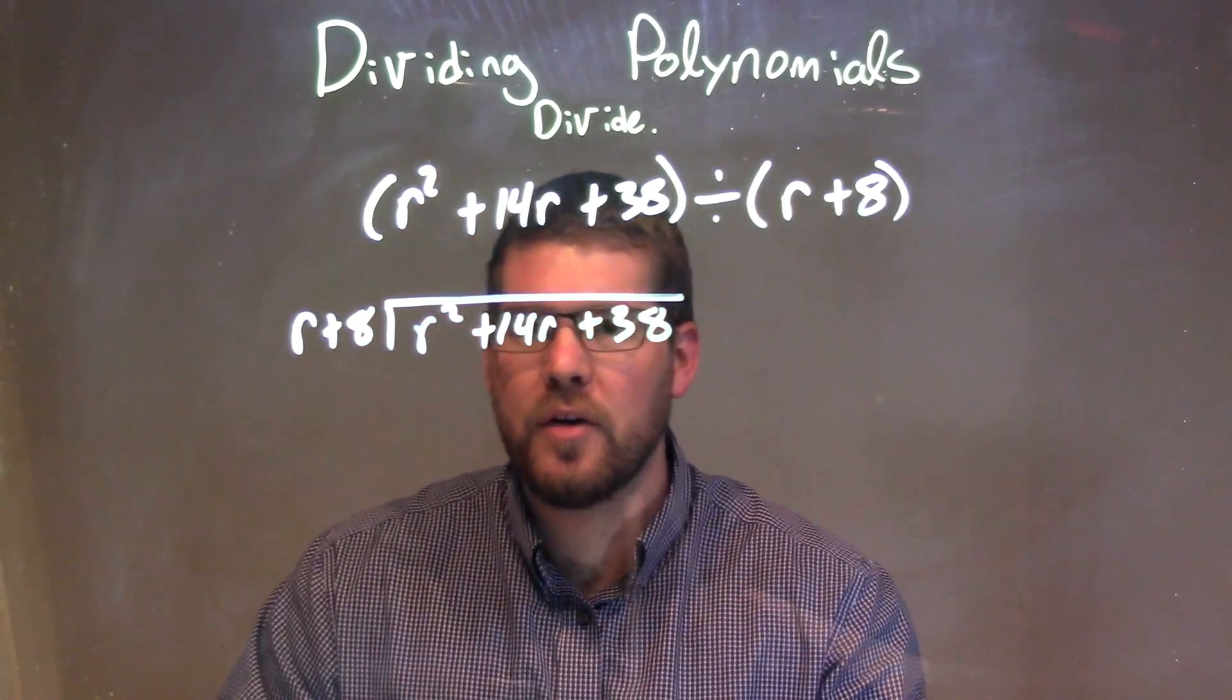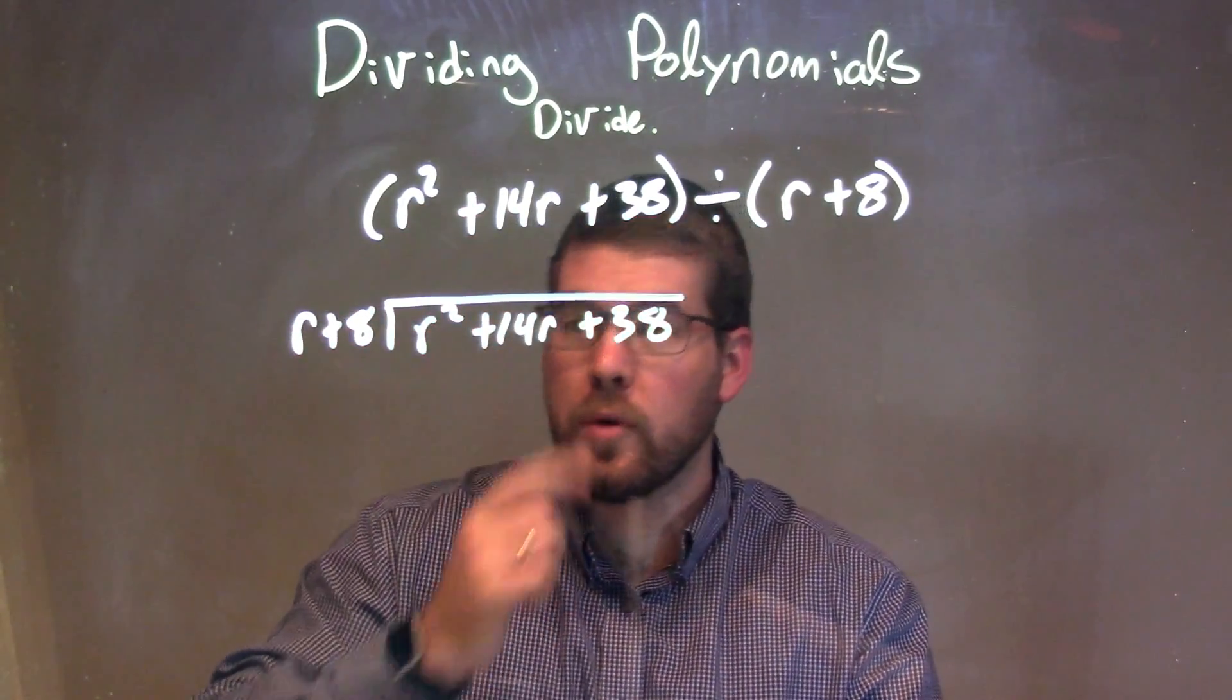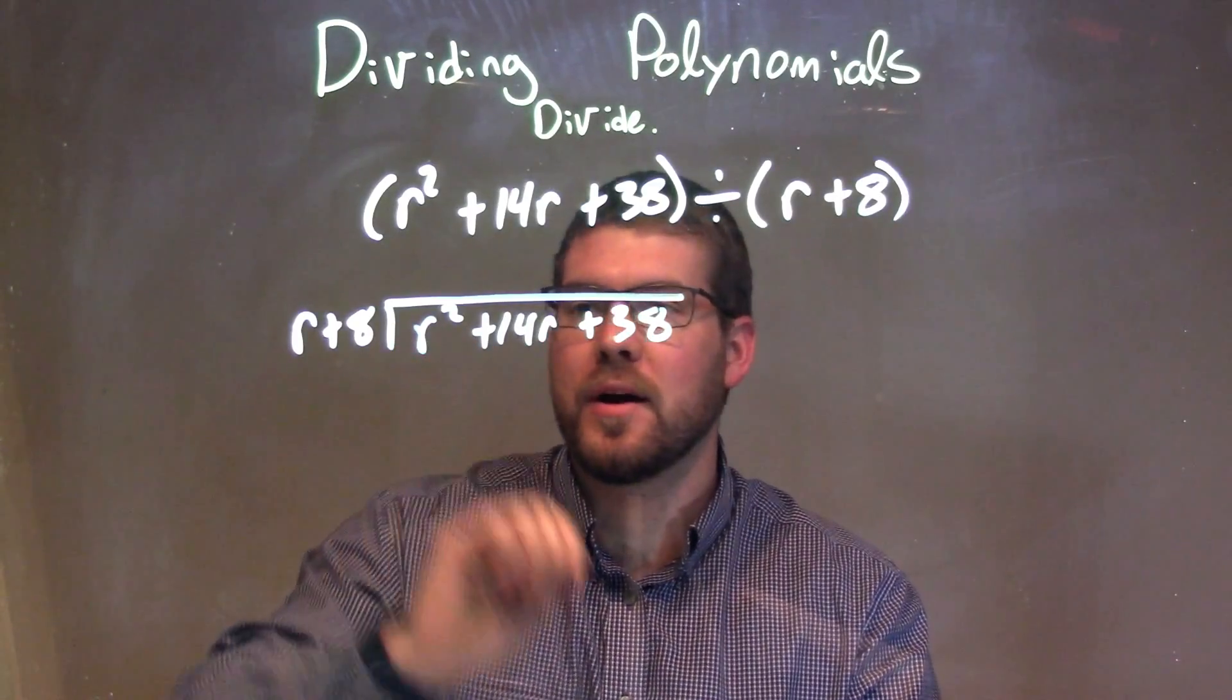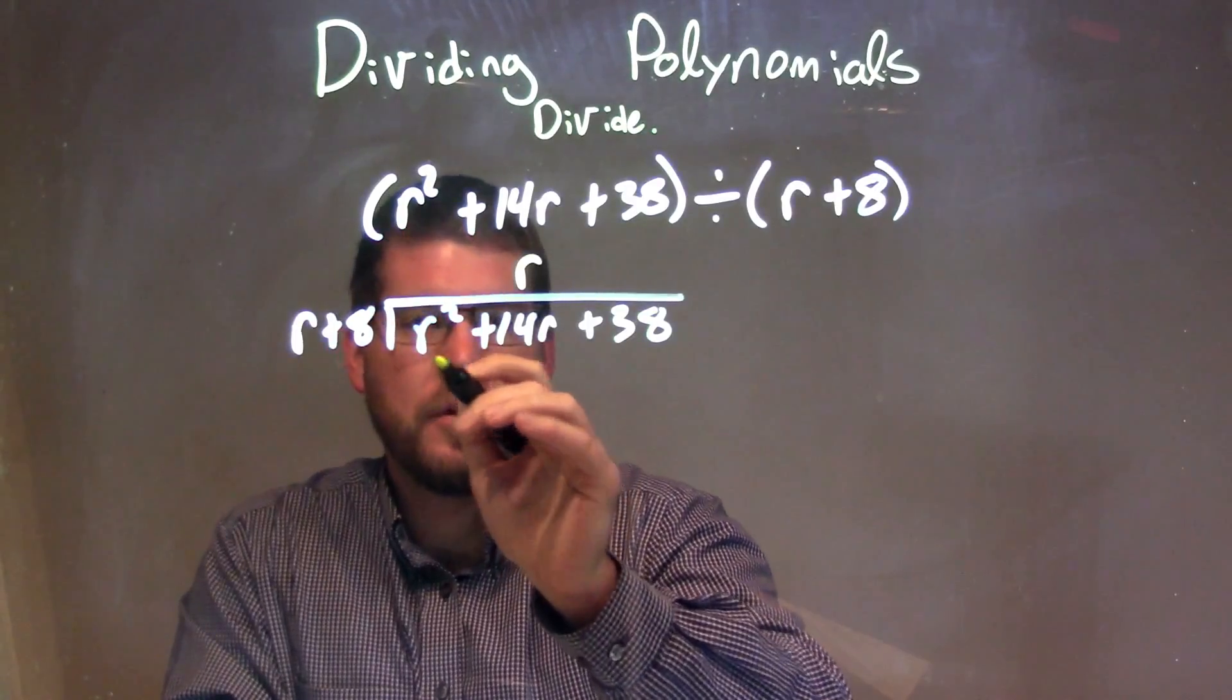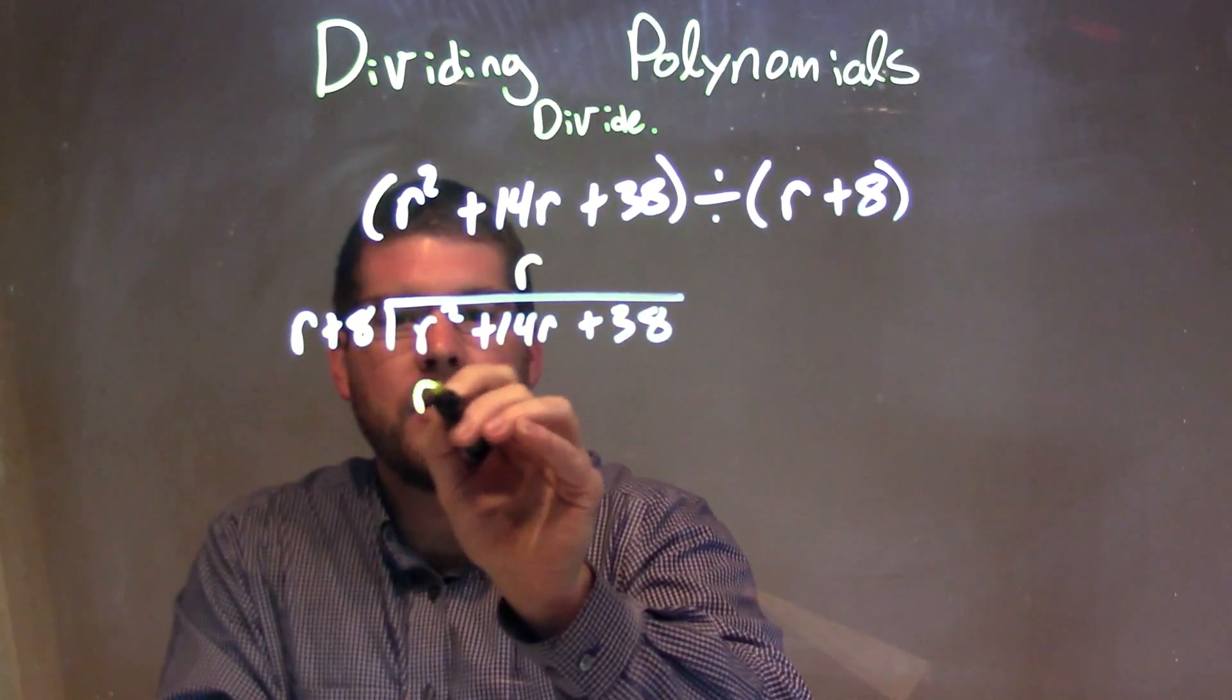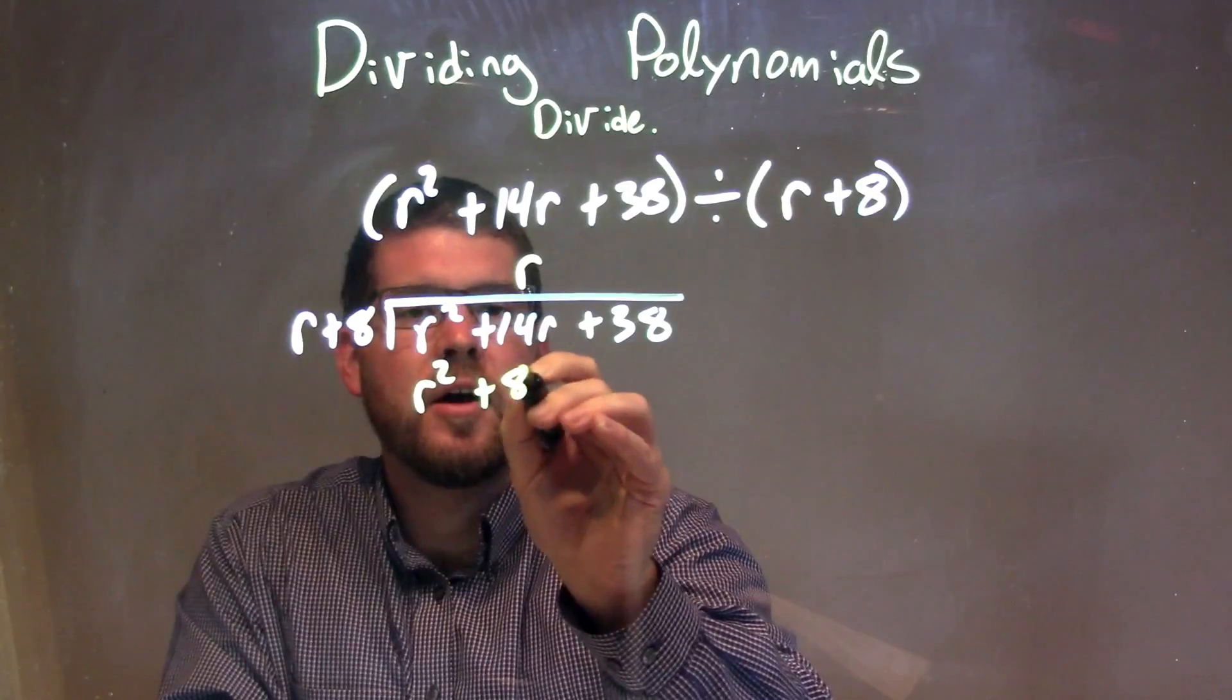So now I have to ask the question, what times r gives me r squared? That's just r, pretty simple. r times r is r squared. So r times r is r squared, and multiply r times 8 is plus 8r.